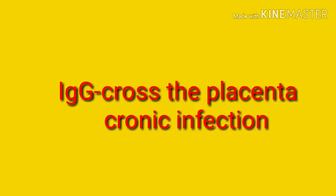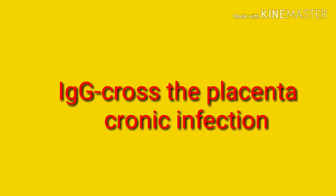For IgG, remember the word 'cro-cro.' First, IgG can cross the placenta — it is the only immunoglobulin that does, and that is why it has the smallest molecular weight of 150,000 daltons, making up about 80% of total immunoglobulin. The second 'cro' stands for chronic infection, meaning IgG mediates the secondary immune response.